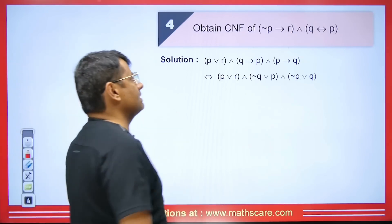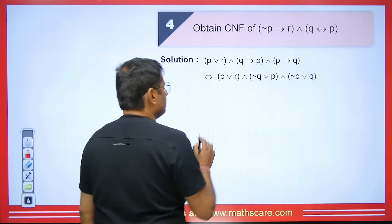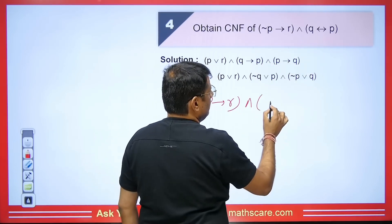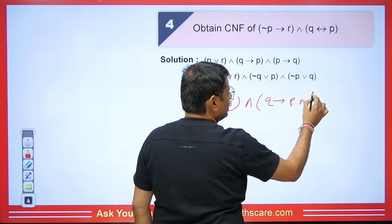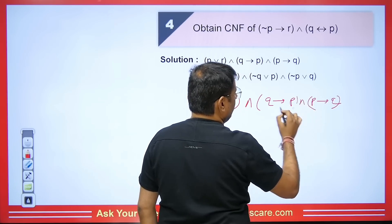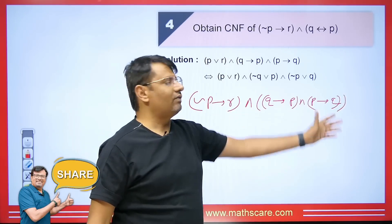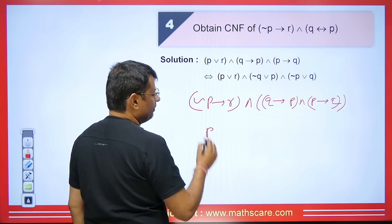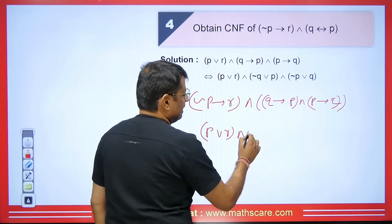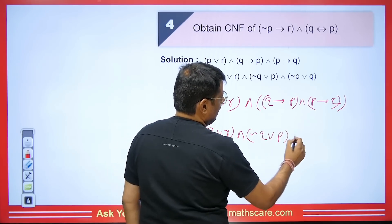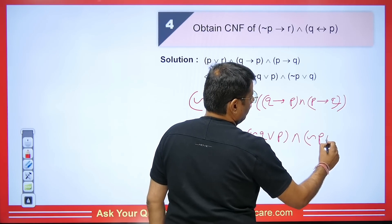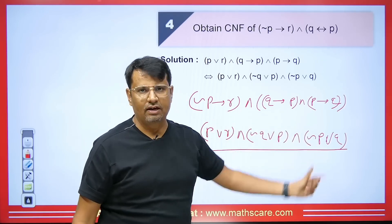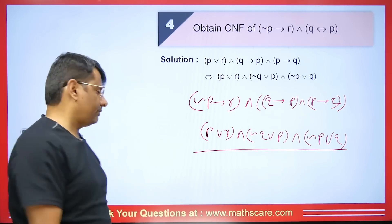This is a very good question where I will teach you how to handle the if-and-only-if sign. We have P if and only if R. We convert this to (Q implies P) AND (P implies Q). Whenever we have implies, we take its negation: so this becomes (negation Q OR P) AND (negation P OR Q). This gives us the conjunction normal form — conjunction between disjunctions.